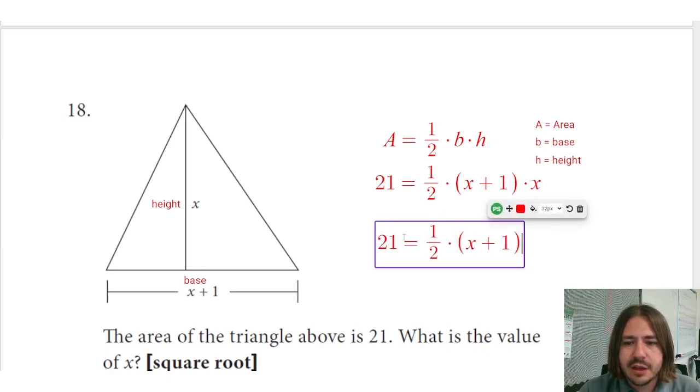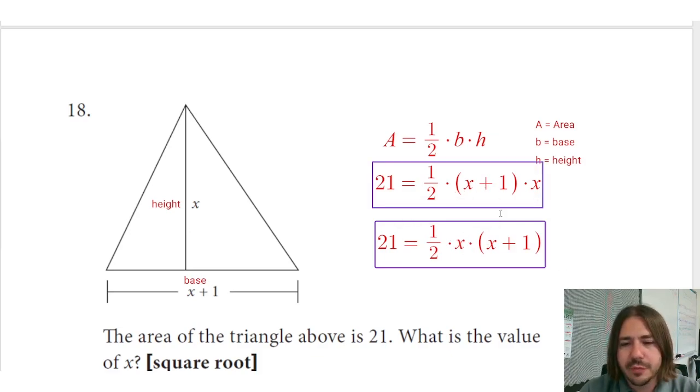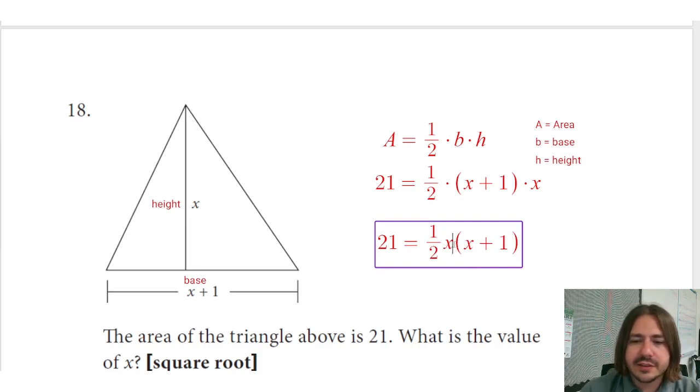Okay, 1/2 times x times this. I really don't need these little dots here, I just wanted to show you how the commutative property would play out. I'm going to delete those. If you don't see a symbol in between a number and a variable like this, it's assumed to be multiplication anyway.